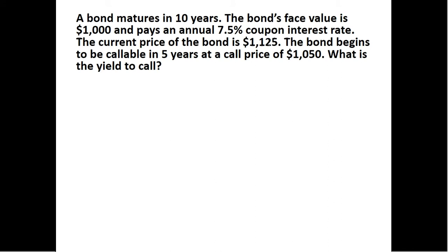We have a bond that matures in 10 years. The bond's face value is $1,000 and pays an annual coupon rate of 7.5%. The bond is currently selling for $1,125, and the bond begins to be callable in 5 years at a call price of $1,050. What is the yield to call?